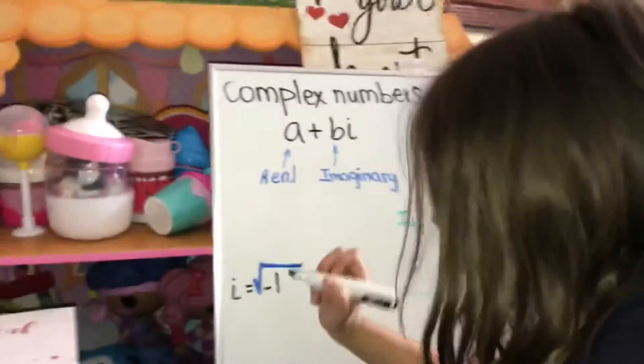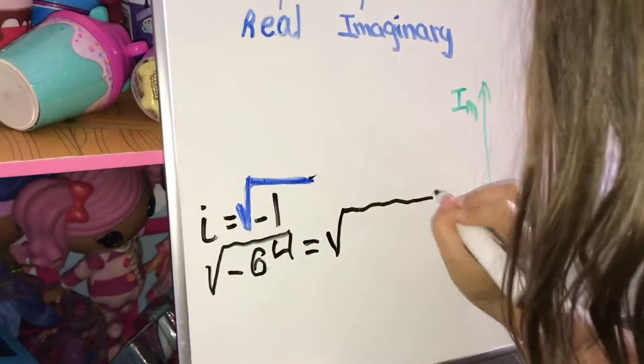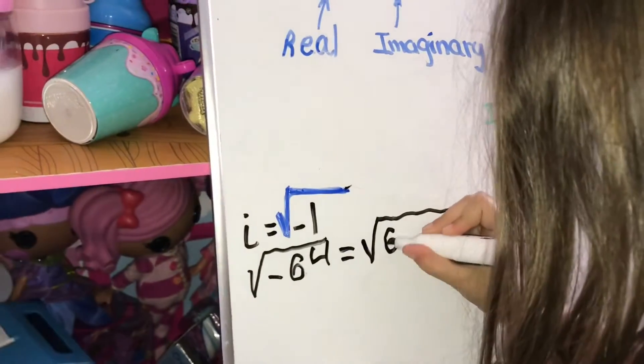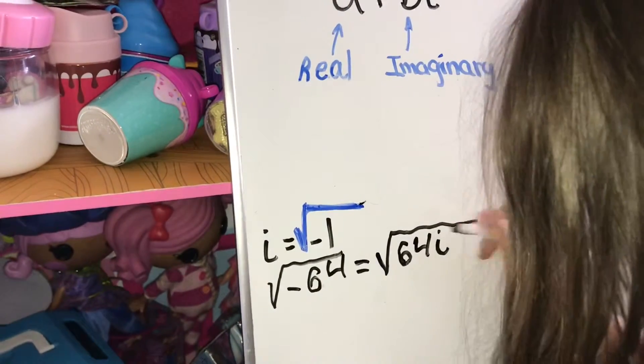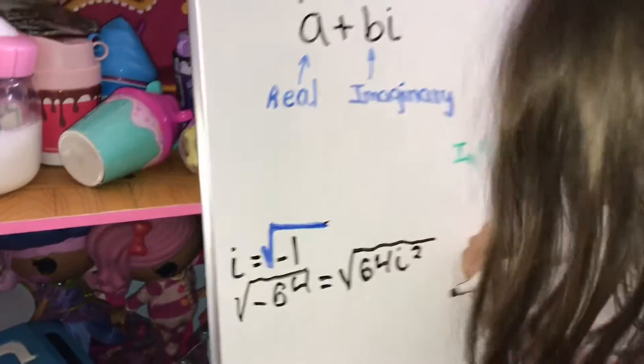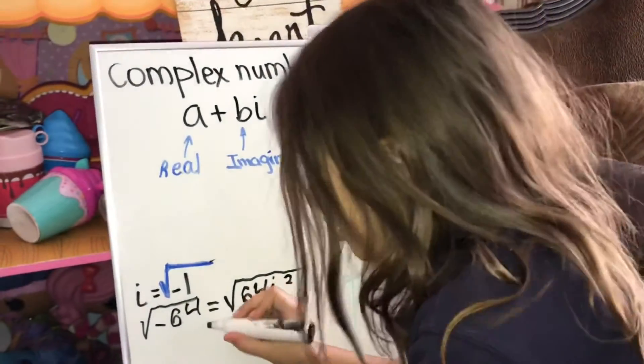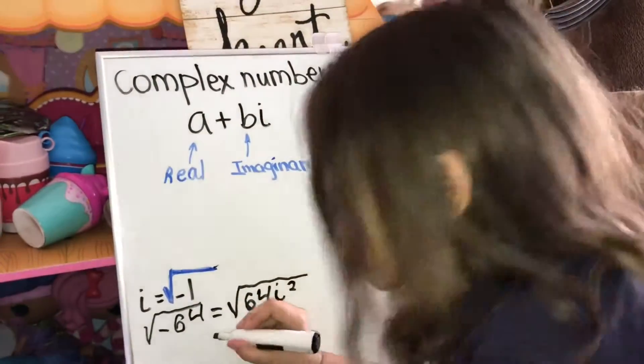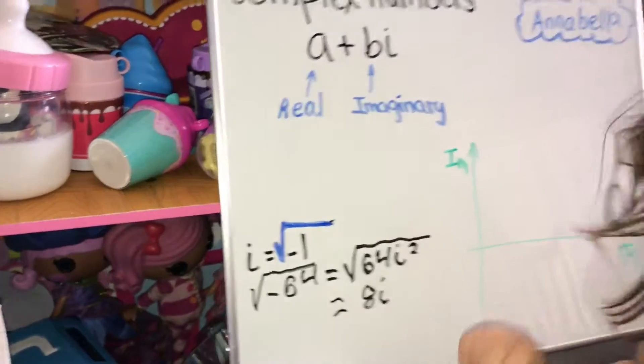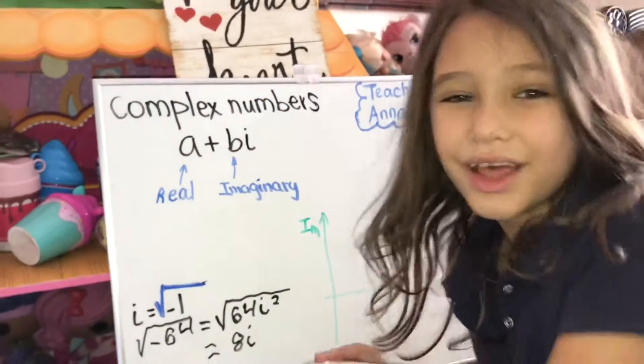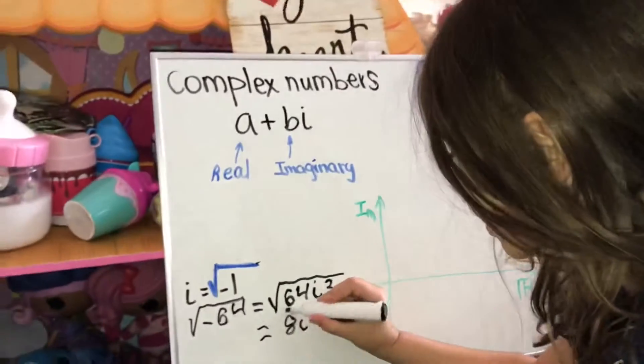This is how we do it. That's equal to AI. That is an imaginary number.